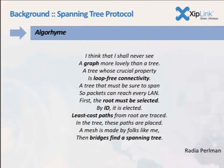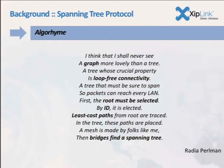How does the spanning tree protocol work? It's described as a graph — edges and nodes — with the goal of creating loop-free connectivity so packets can reach every node but can't loop back. You select a root by its ID. Then you pick the least cost path through the graph — the fastest path. If you have one slow link and one fast link, spanning tree picks the fastest. If all links are equally fast, spanning tree picks the one with the lowest MAC address.